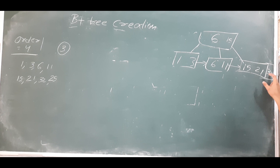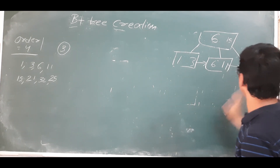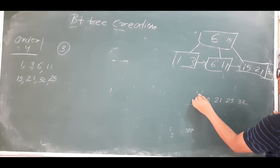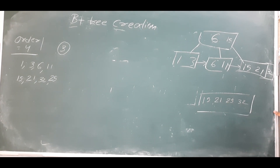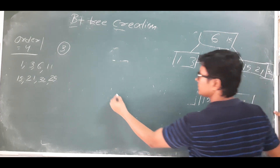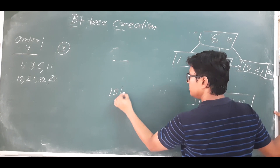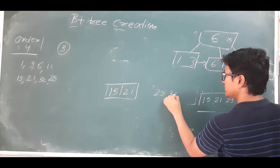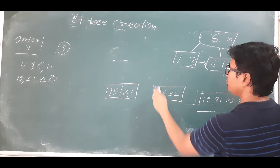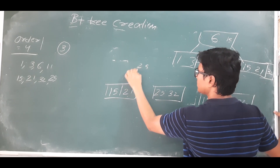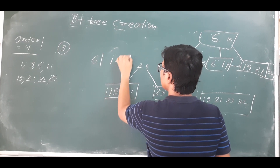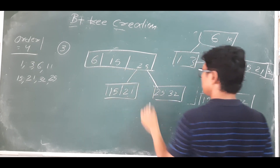Now I want to insert 25. 25 is greater than 15, greater than 21, and less than 32, so the node becomes 15, 21, 25, 32 — that is an overflow. We keep the first two elements, 15 and 21, in the left subtree. Remaining elements 25 and 32 go in the right subtree, and the minimum of the right subtree, 25, is placed in the parent node. So the parent now has 6, 15, and 25.